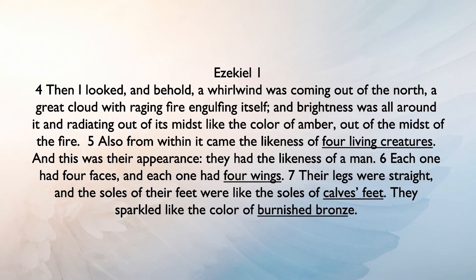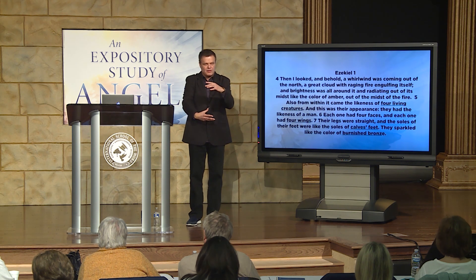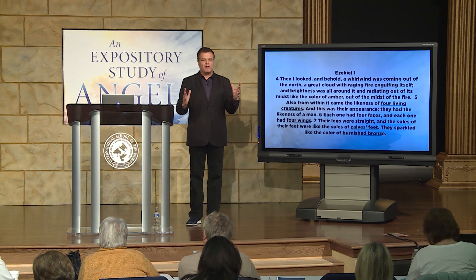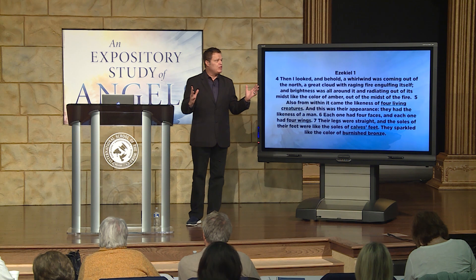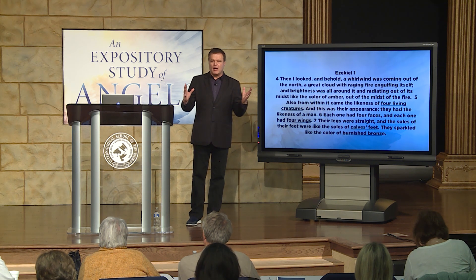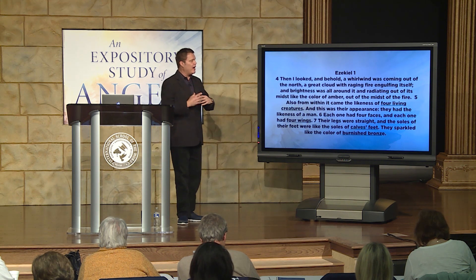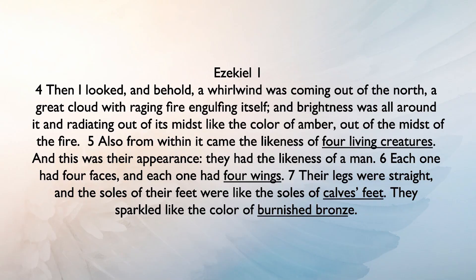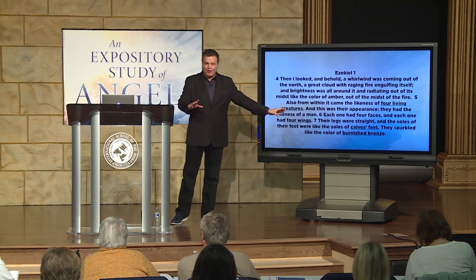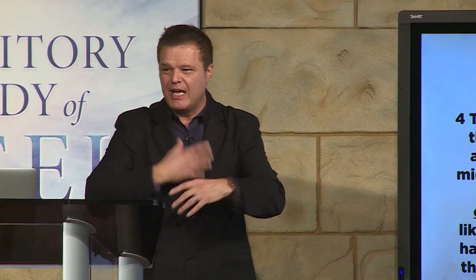We start with Ezekiel chapter one: 'Then I looked, and behold, a whirlwind was coming out of the north' — that's where God's throne is, in the sides of the north. 'A great cloud with a raging fire engulfing itself' — this fire is engulfing itself, billowing, not just a cloud of fire or a bright glow, but like a raging fire, like a volcano. 'Brightness was all around it, and radiating out of the midst of the color of amber, out of the midst of the fire.'